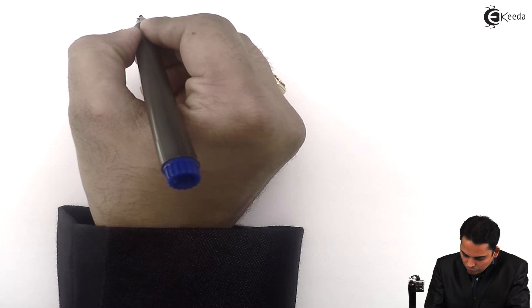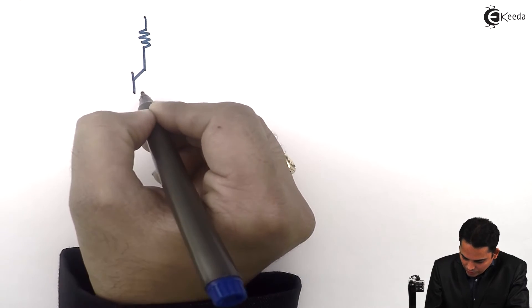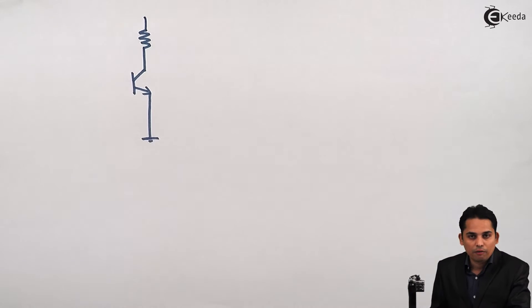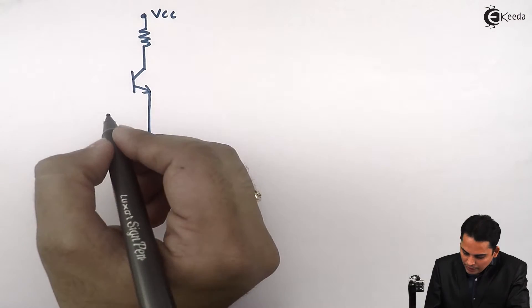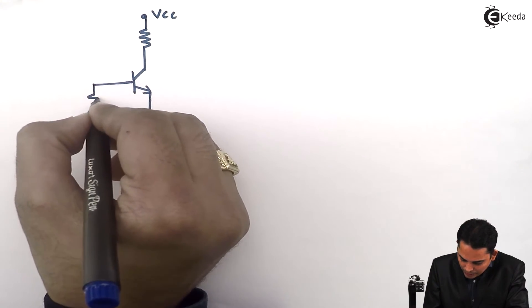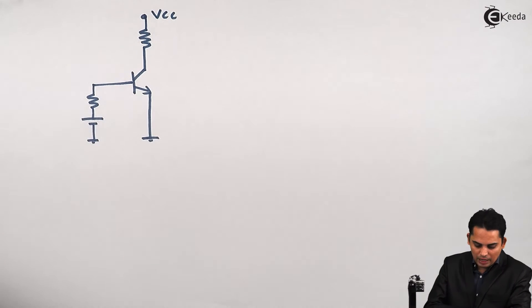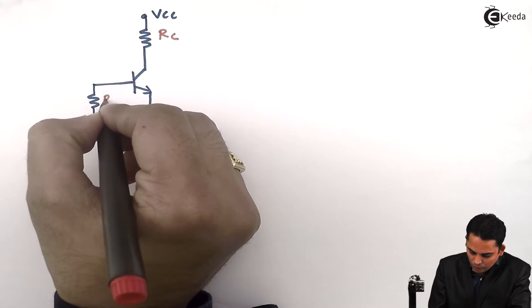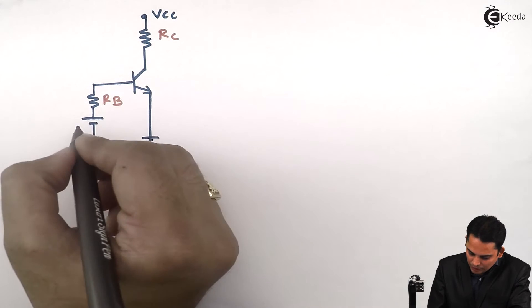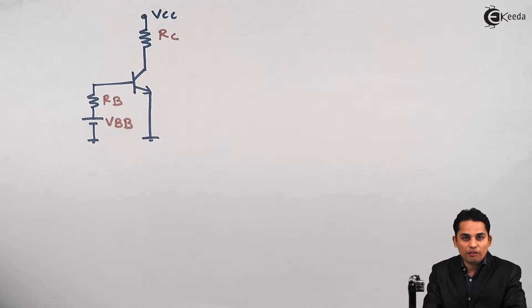After opening the capacitors, the circuit diagram will look like this. Starting from VCC, we will have RC, then the transistor in common emitter configuration, and then the emitter. We will also have the DC supply VCC. At the input, we will have a base resistor RB along with a base battery VBB. The resistor at the collector is called RC, the resistor at the base is called RB, and the battery applied at the base is called VBB.